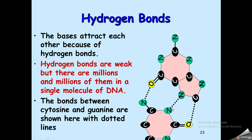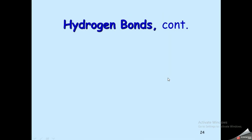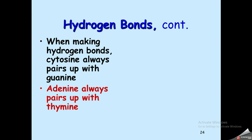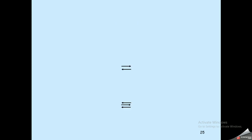For example, between cytosine and guanine there are three hydrogen bonds. Between adenine and thymine, there are two hydrogen bonds. These hydrogen bonds hold the two complementary strands of the double helix together.